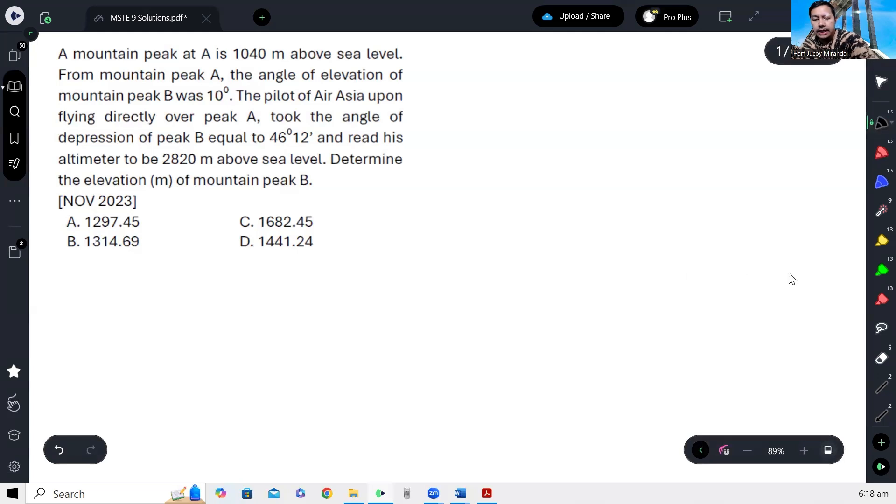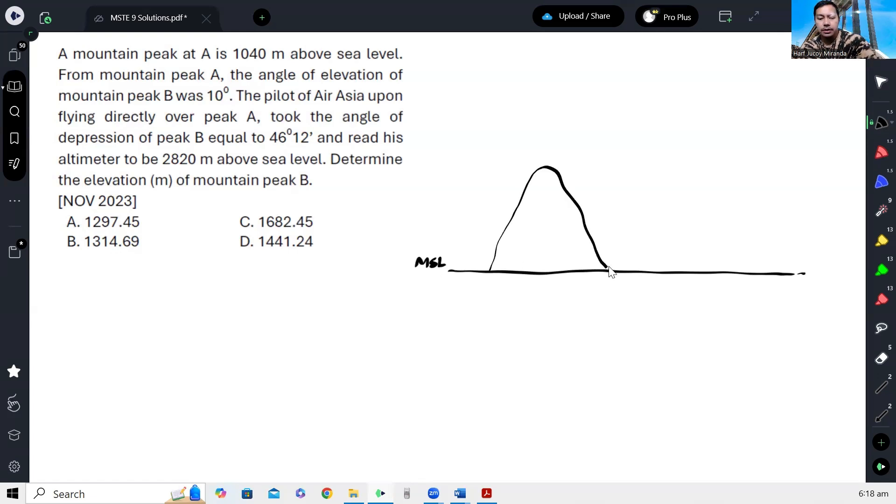Alright, so let's draw the mountain. First, let's say this is the sea level. So that is zero elevation. Mountain A has a certain elevation. So let's say this is A.